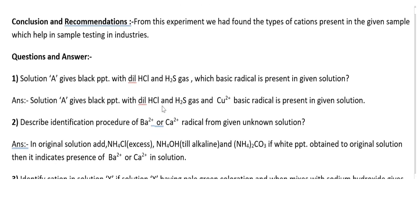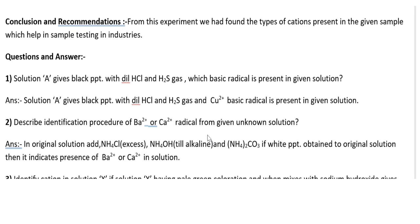If given solution A gives black PPT with dilute HCl and H₂S gas, then Cu²⁺ is the basic radical present in the given solution. Then, describe the identification procedure for Ba²⁺ or Ca²⁺ radical from a given unknown solution.